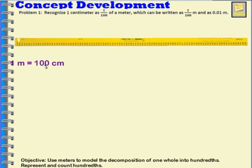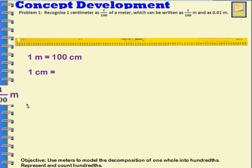So one meter is equal to 100 centimeters. What fraction of a meter is one centimeter? Since there's 100 centimeters in the whole meter, one of those centimeters would be one one-hundredth of a meter.